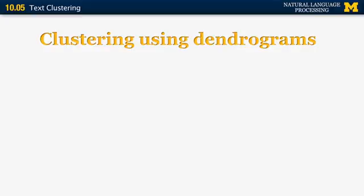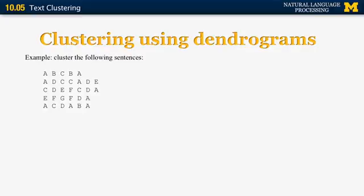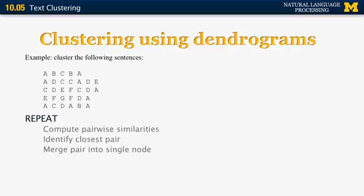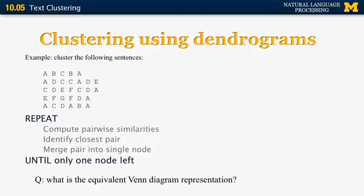Now let's look at an example of clustering using dendrograms with actual sentences or documents — for instance, documents containing sequences of terms like A, B, C, B, A or A, D, C, C, A, D, E, and so on. To build the hierarchical clustering diagram, we compute pairwise similarities between all document pairs (1 to 2, 1 to 3, 1 to 4, etc.), identify the closest pair (say documents 1 and 2), merge them into a single node based on combined word frequencies, and repeat until all documents are clustered. We can also represent this as a Venn diagram where document 1 and 2 form one cluster, documents 4 and 5 another, those combined with document 3, and then all five together. This concludes the section on text clustering.